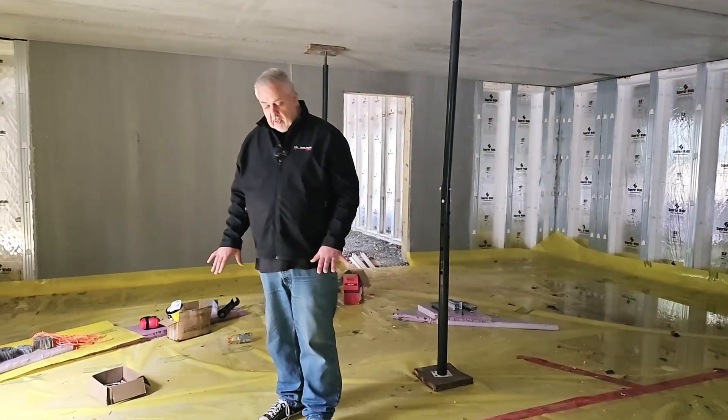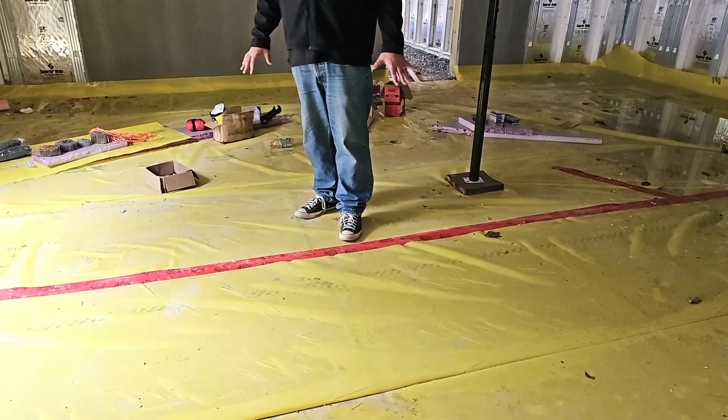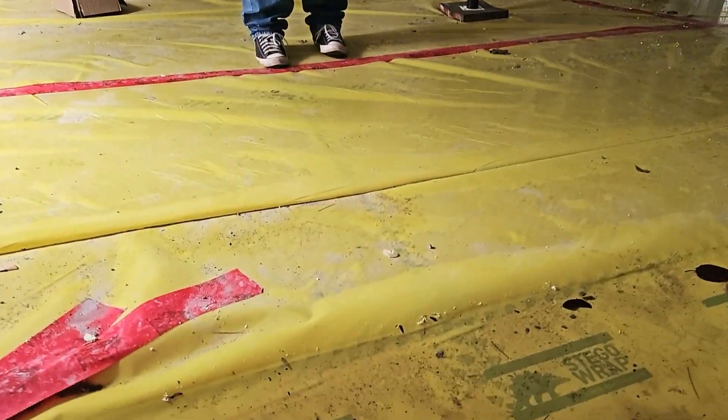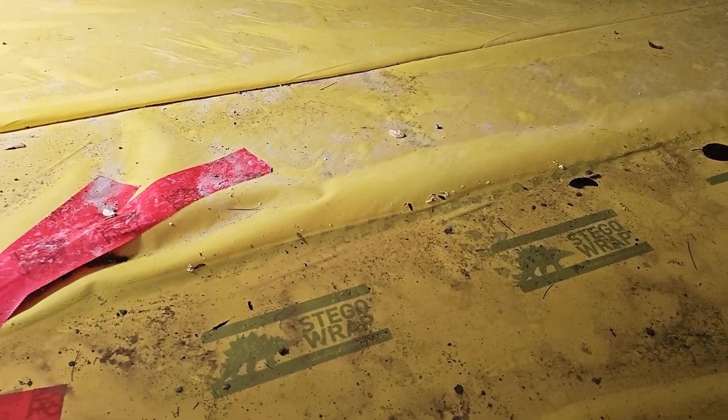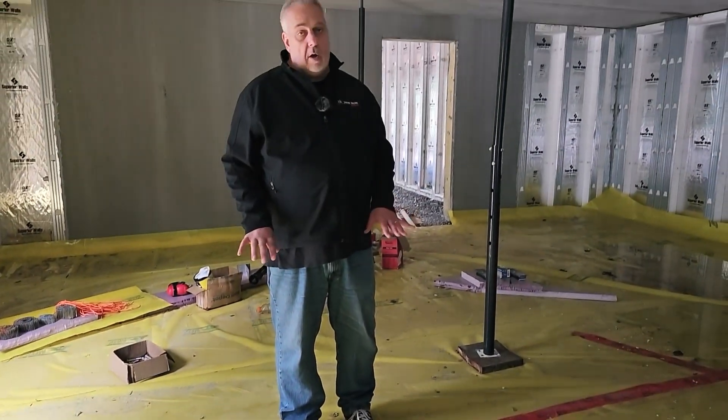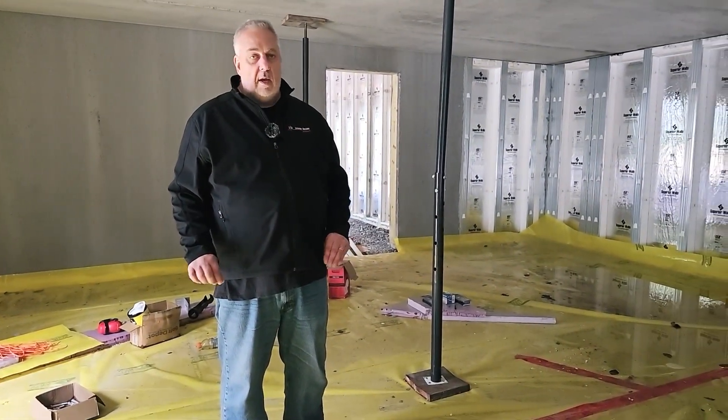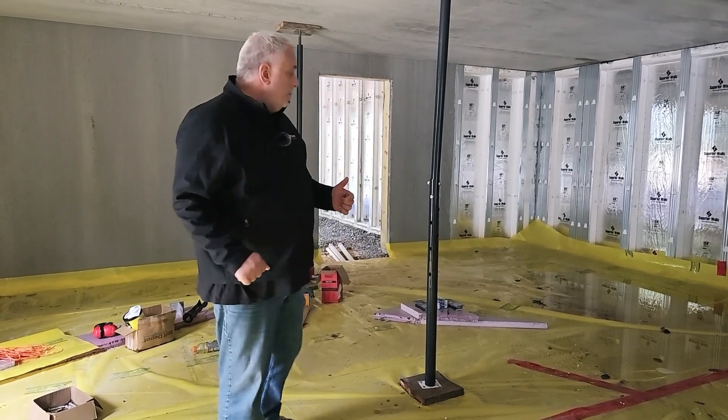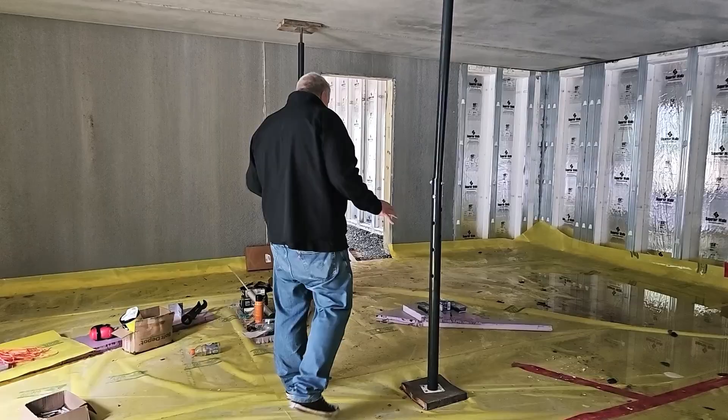You can see on top of the foam and beneath the slab we're going to have our Stego vapor retarder system here. It comes with their proprietary tape. We'll turn it up, we'll pour the slab in here. This slab is also going to be a radiant floor heated slab down here. We're down here in the workshop.